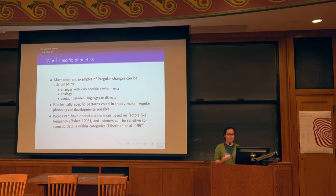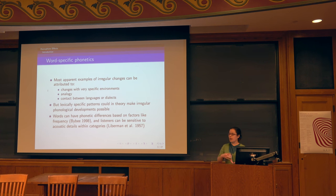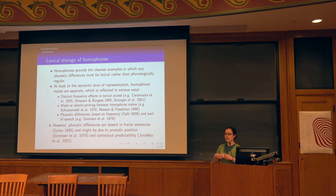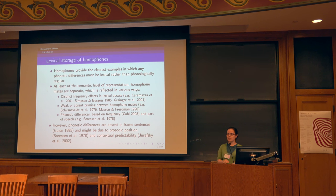In theory, we could predict morphologically irregular developments based on lexically specific patterns of acoustics, because various researchers have observed that words can have phonetic differences based on things like frequency. We've also demonstrated that listeners can be sensitive to within-category differences. The question is whether we can combine these things to get a separation between words. The clearest example would be homophones — if two homophones split, it's definitely about a lexical effect, and can't just be a sound change with a very specific environment.